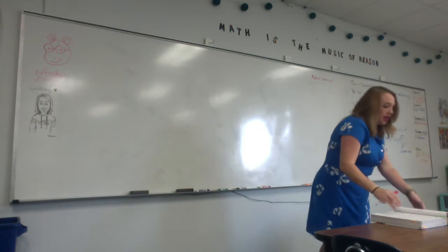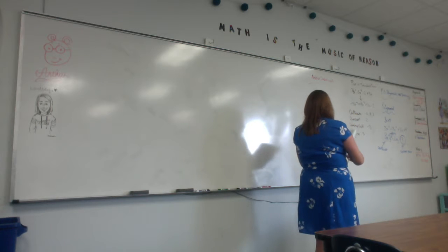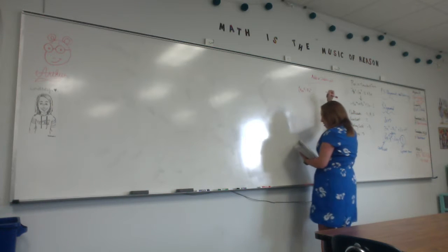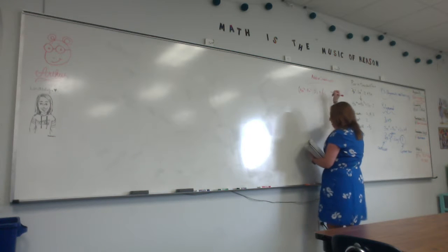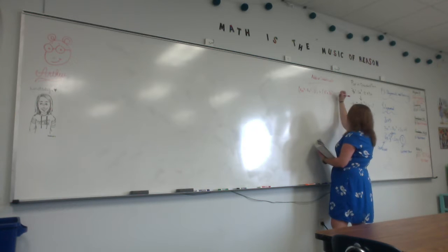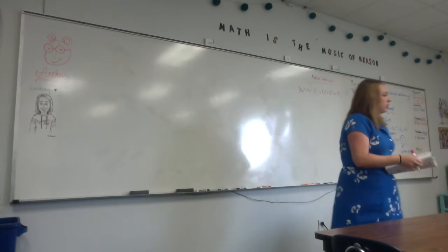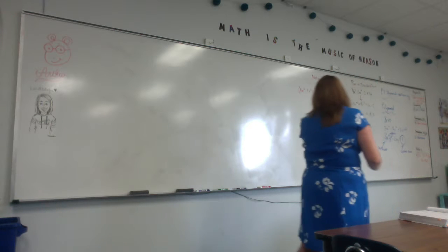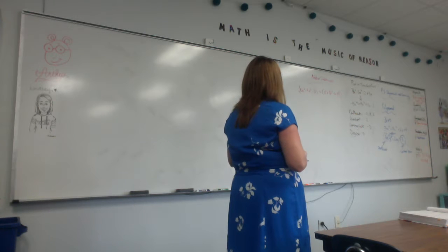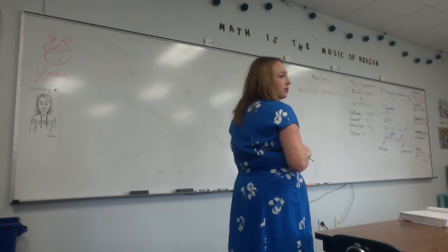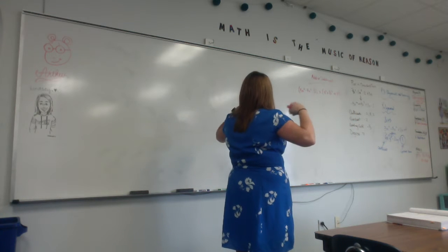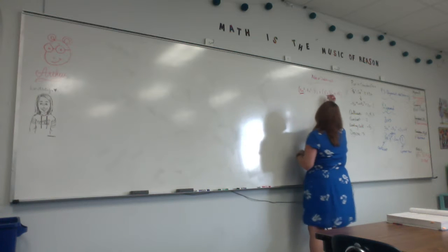So let's say you have 5x cubed minus 7x squared minus 3 plus x cubed. What do I need to do here to add or subtract? You add the ones that are like terms. I have 5x cubed and I have a positive x cubed there.